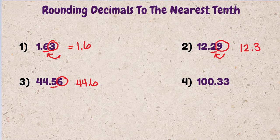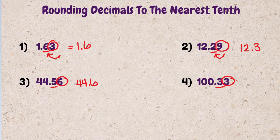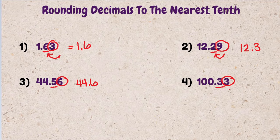100.33. 3 is the number in the tenth spot. The second 3 is what we want to evaluate. It's less than 4, so this number stays the same. 100.33 rounds to 100.3.